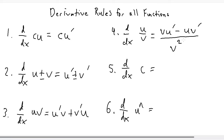Or the easiest way I remember is by saying low d high minus high d low, all over low squared. The derivative of a constant will always be zero, and the derivative of u to the n power is going to be the chain rule, where you bring the power down, subtract the power by one, and multiply by the derivative of the inside function, u prime.